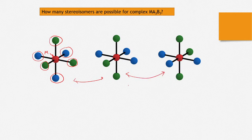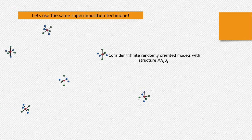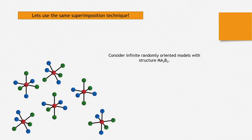How many of these kind of molecules are possible? So the plan is that we will use the superimposition technique, as we used in the video where all six ligands were different. We will repeat that kind of thought experiment. For that, we will start with infinite randomly oriented MA3B3 structures. Suppose there are infinite such molecules.